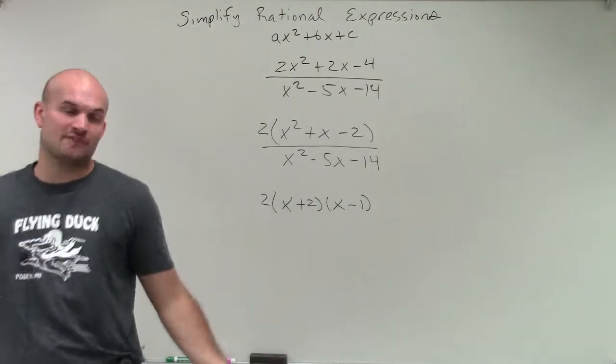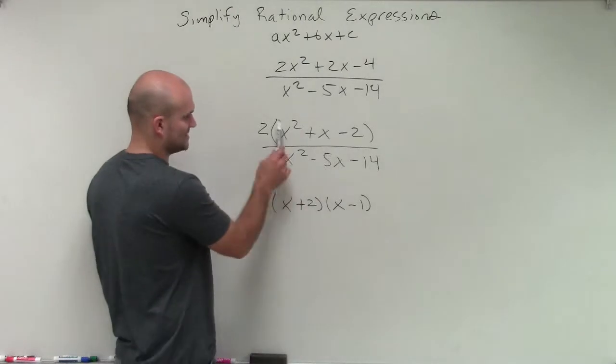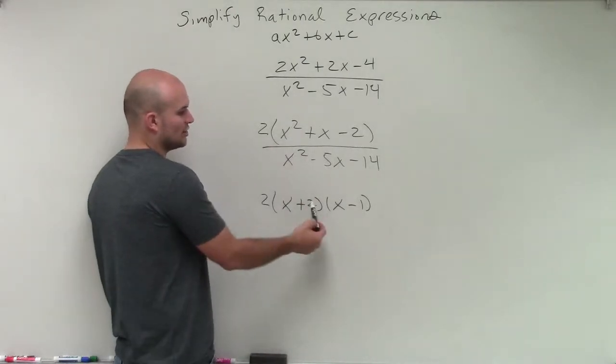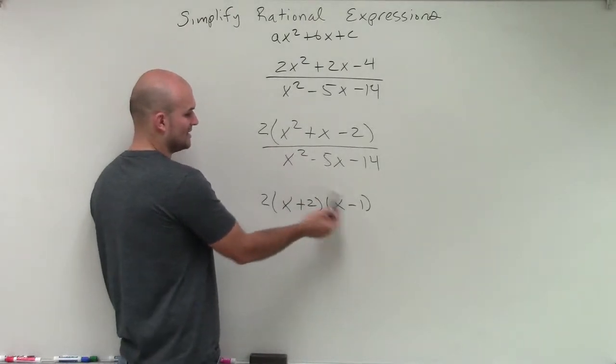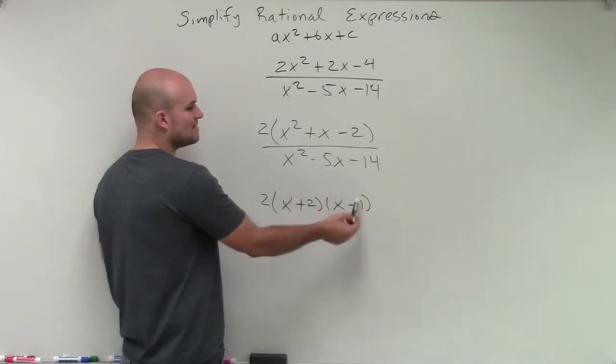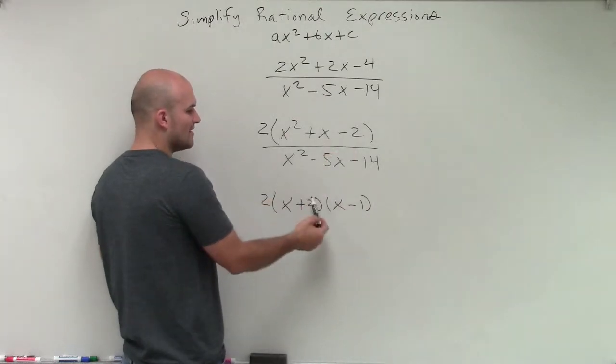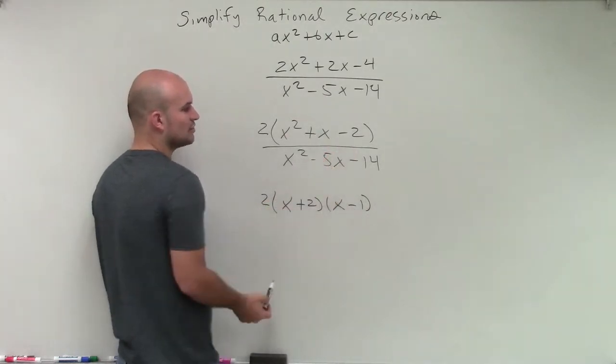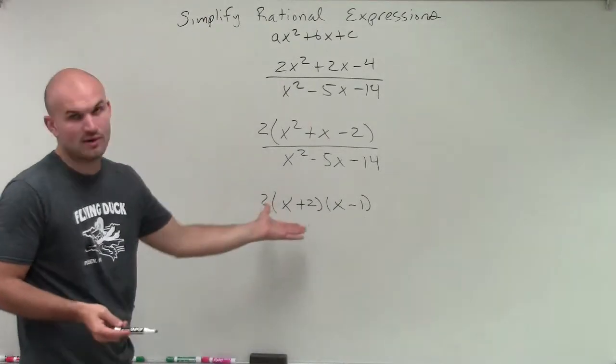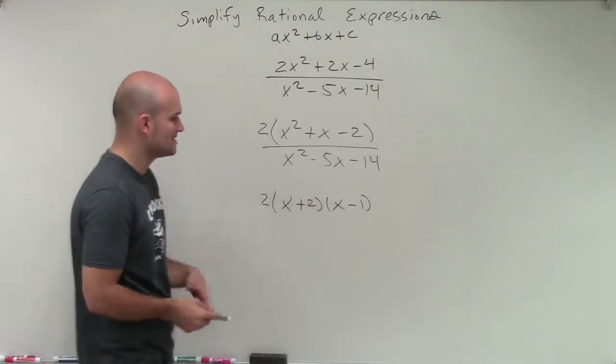And I can go back through inspection by looking at FOIL. I know that x times x gives me x squared. And then these are going to be both multiplied by 2x and negative x. But let's do 2 times negative 1 is negative 2. And then 2 plus negative 1 is going to give me a positive 1, and those will be 2x plus negative x will give me a positive x. So that is correct.